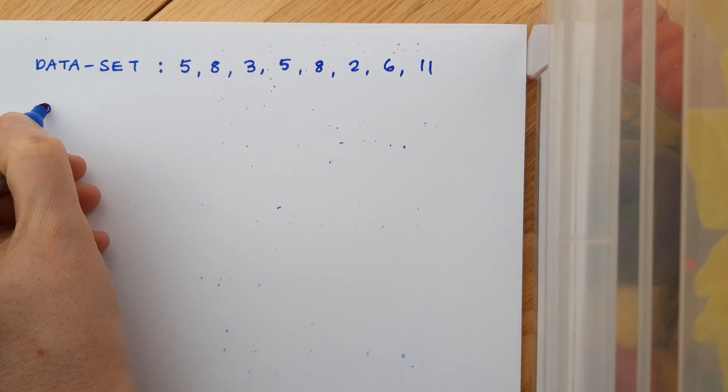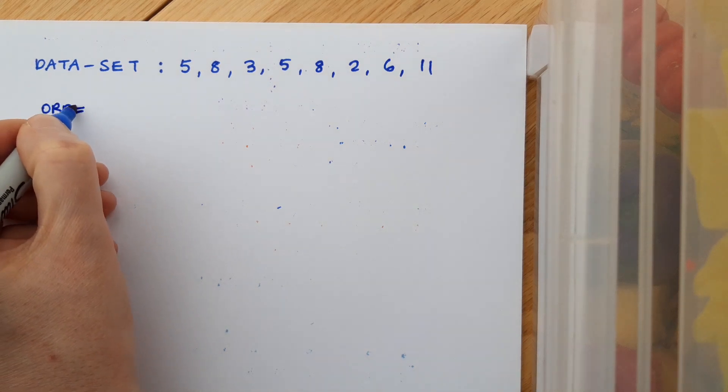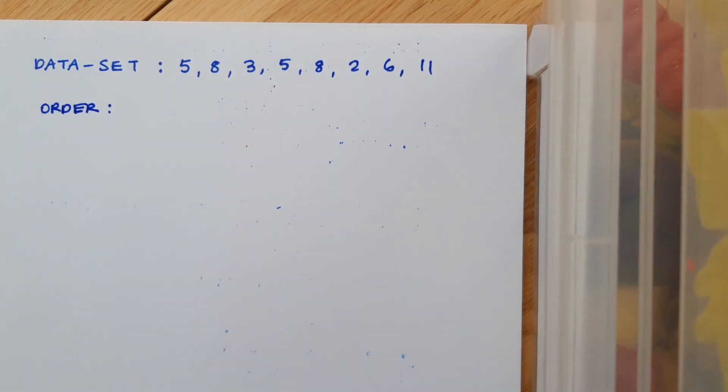Let's do a second example for calculating those three averages. This time, my data set is 5, 8, 3, 5, 8, 2, 6, 11. Again, don't forget, I have to order it first of all. And again, you can do that ordering by using a line plot or just by writing it out as a list. And here's my ordered data set.